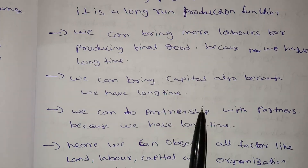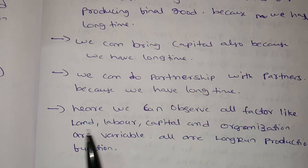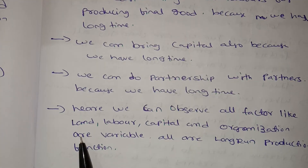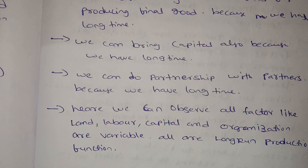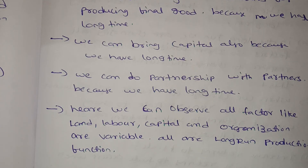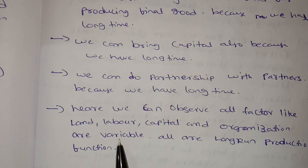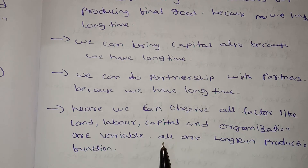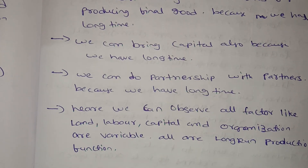We can observe that all factors — land, labor, capital, and organization — are variables in the long-run production function. All are variable in the long-run production function. Thank you for watching my video.